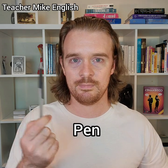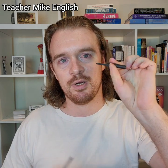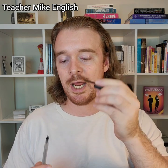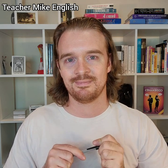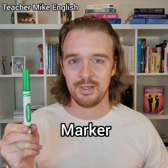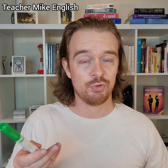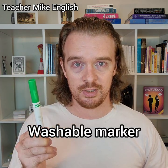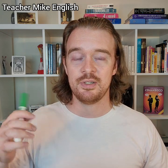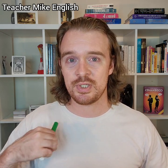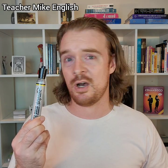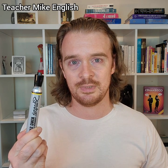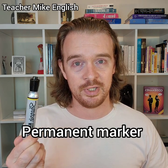This is a pen, and this part is called the cap. I'm going to put the cap back on the pen. This is called a marker — to be more specific, it's the type of marker that children use, so this is called a washable marker. It's called a washable marker because if it gets on your clothes, you can wash it out. This type of marker you cannot wash out of your clothing — this is called a permanent marker.